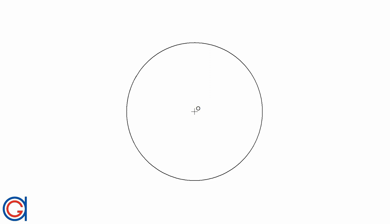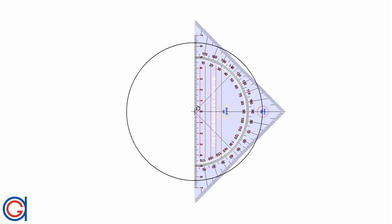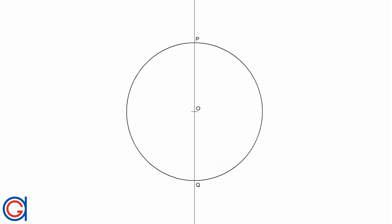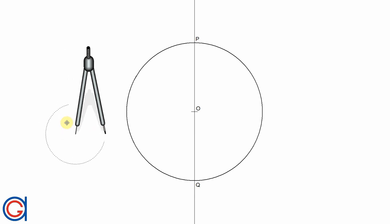Hello, today we are going to learn how to circumscribe a square around a given circle. The first step is to draw a vertical diameter through the circle and elongate it on both sides. Where it cuts the circumference we will name P and Q, and our center point is O.